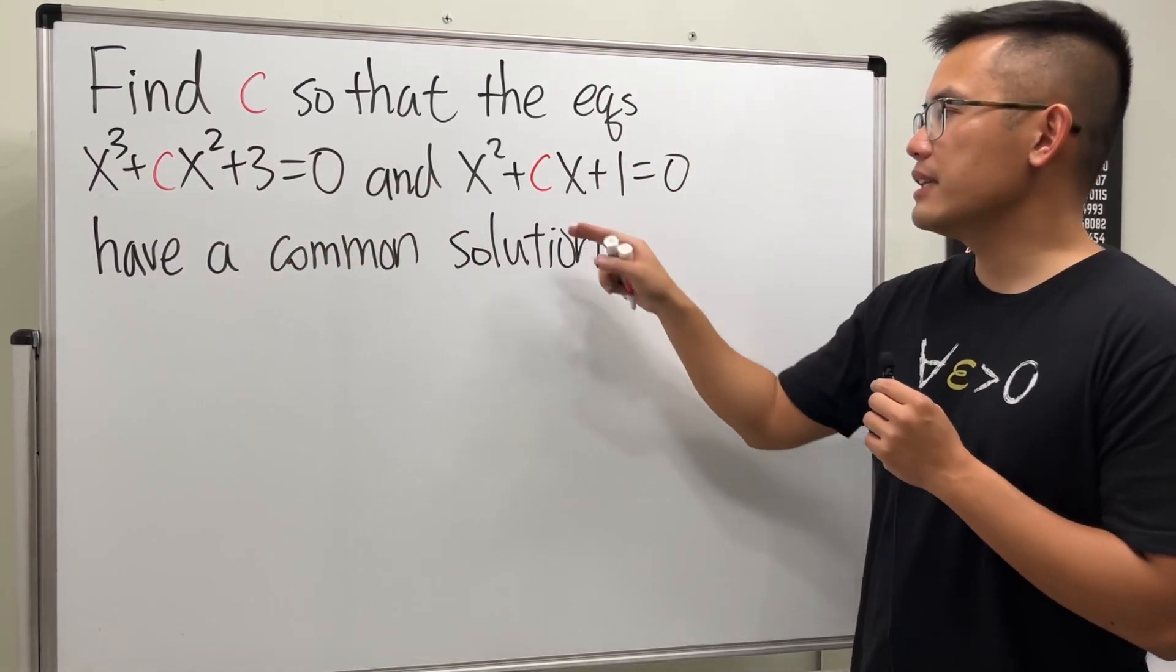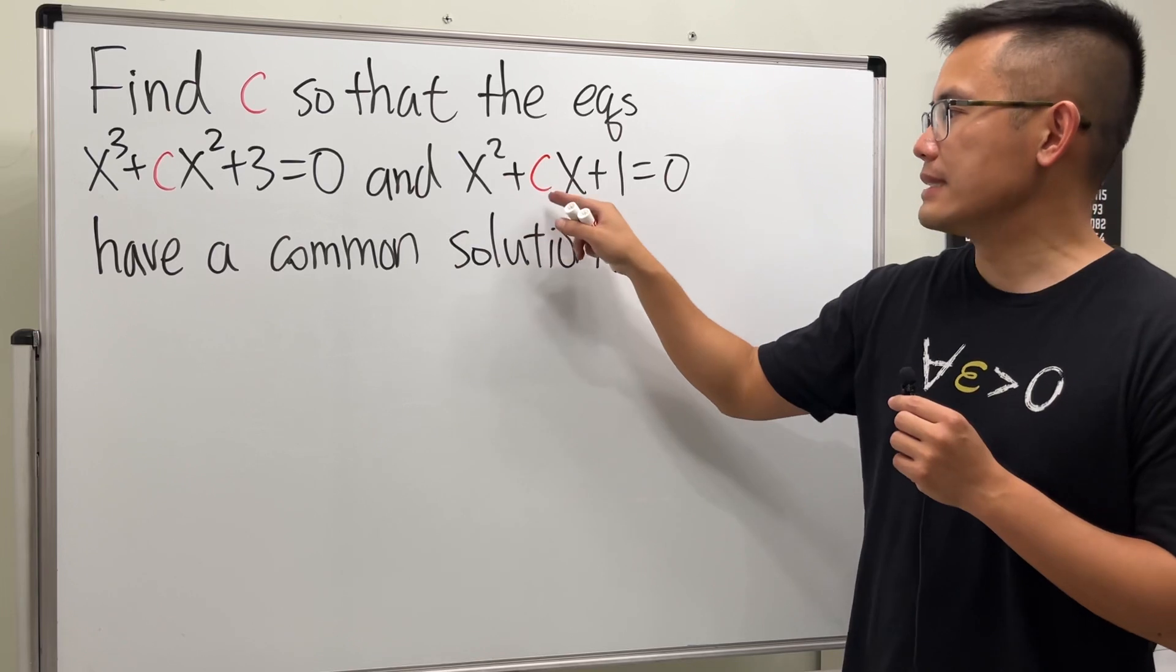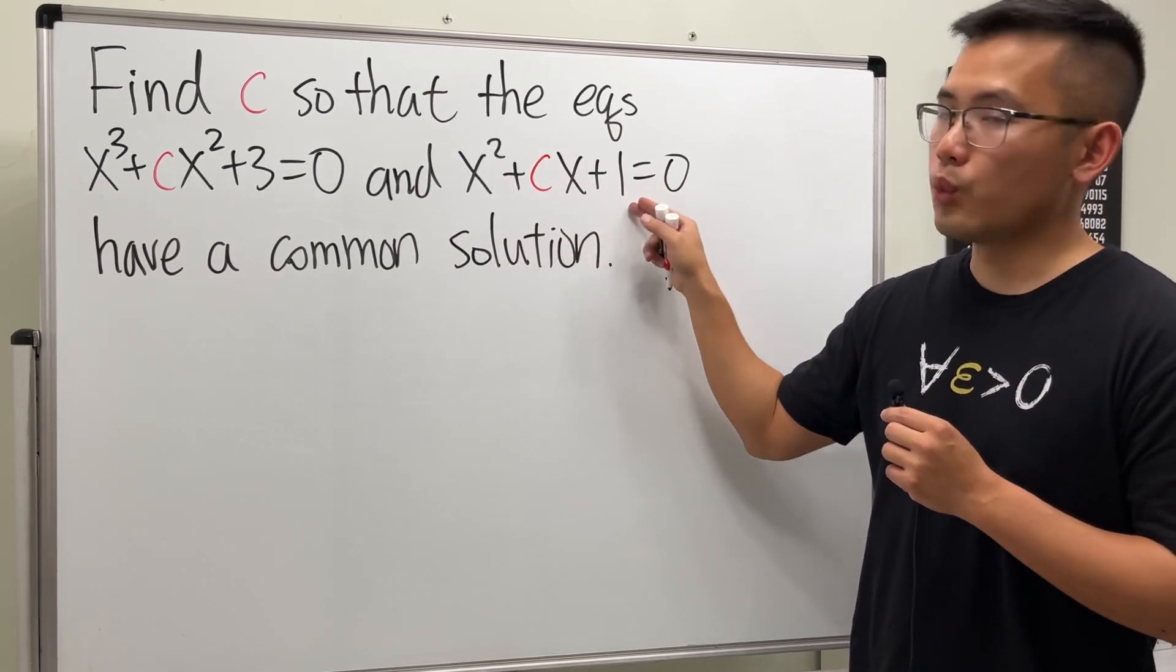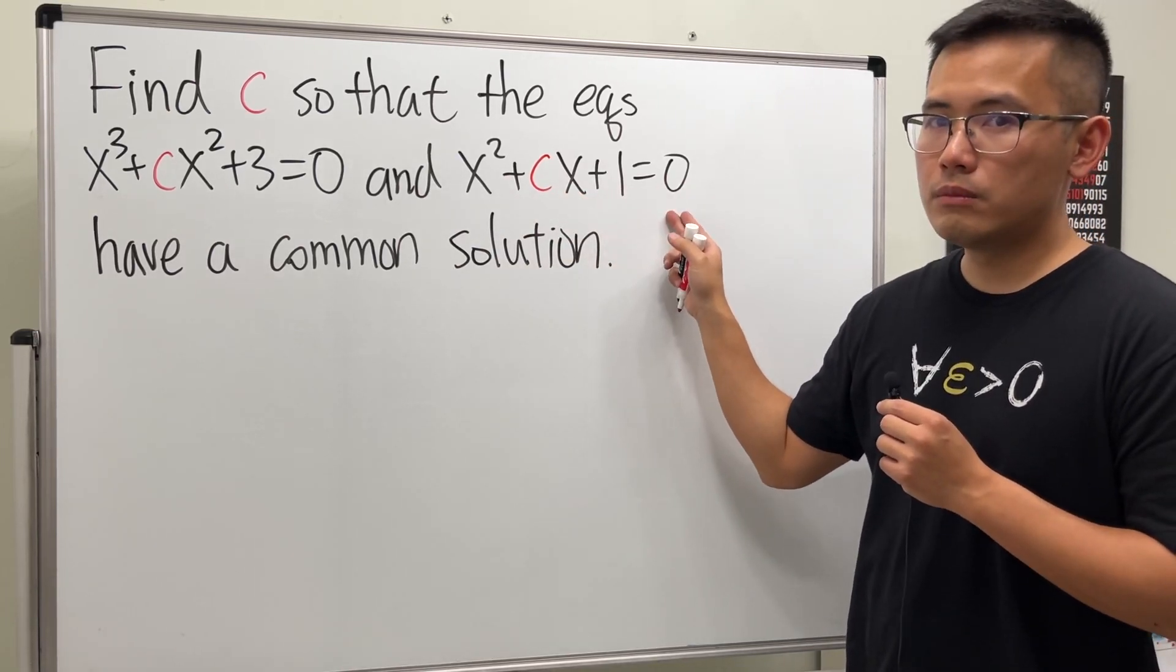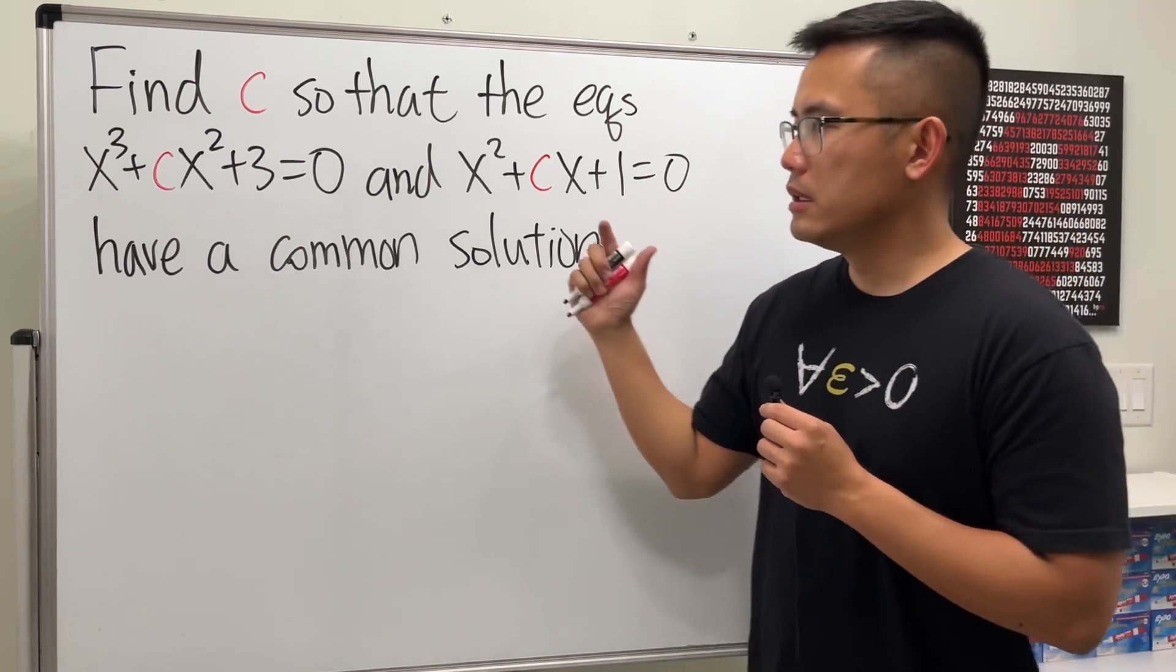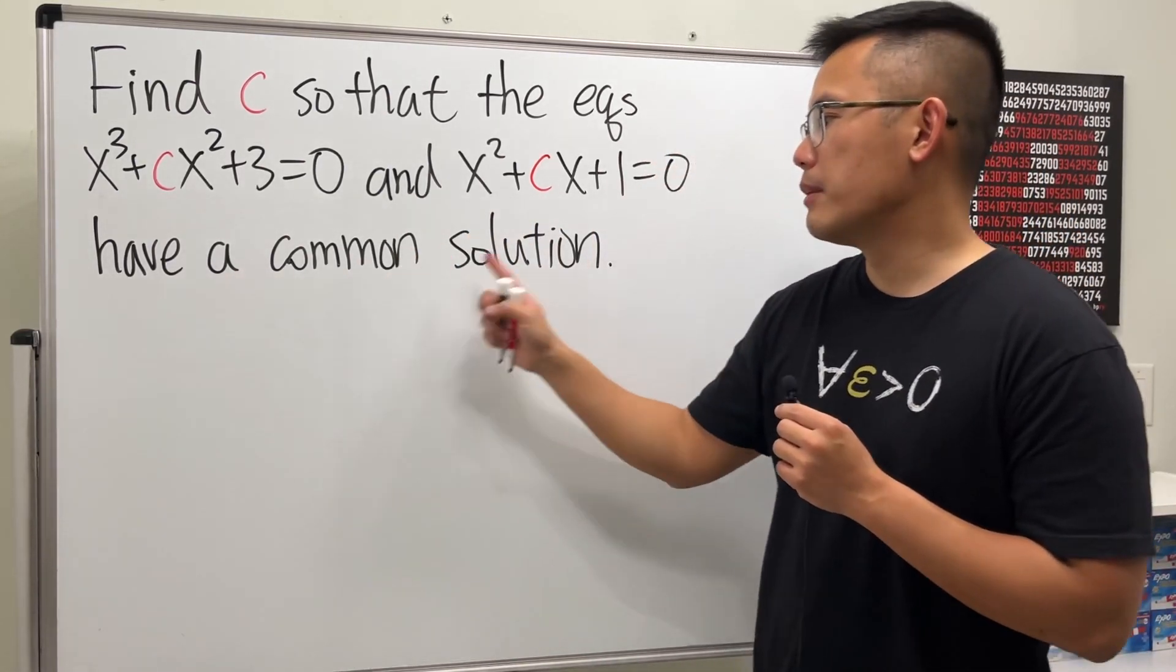And the second equation is x squared plus c x plus one is equal to zero. We want to find a c so that these two equations have a common solution.